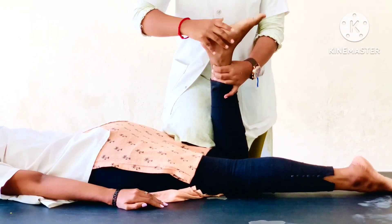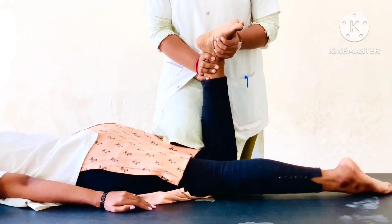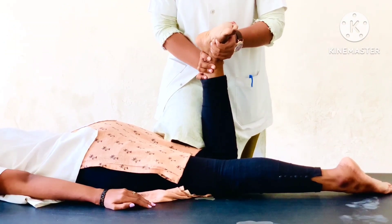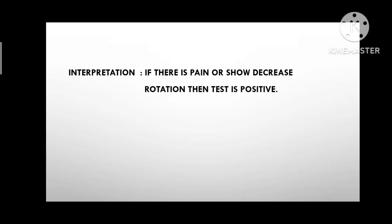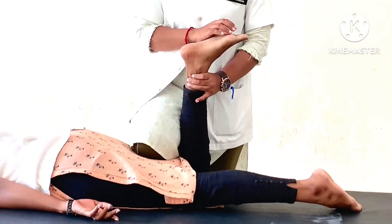The examiner rotates the tibia medially with compression to check lateral meniscus injury. Interpretation: if there is pain or decreased rotation, the test is positive. For ligamentous injury, the examiner rotates the tibia medially with distraction to check lateral cruciate ligament injury.